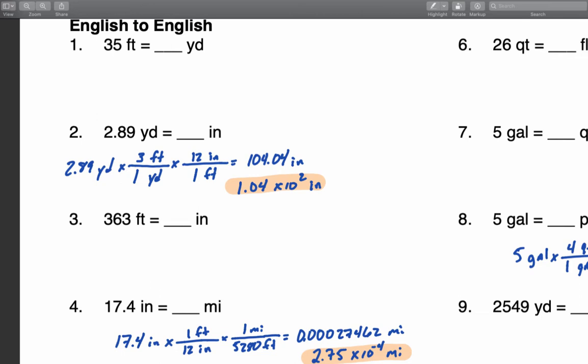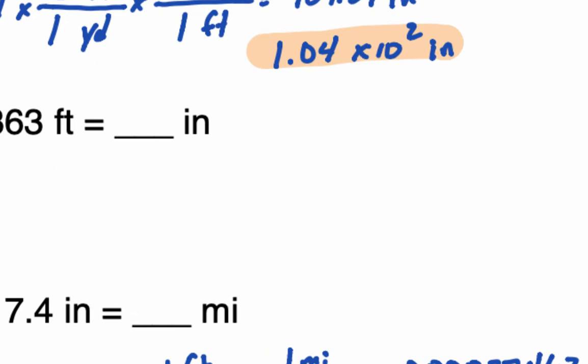So if the number you want to convert has three significant digits, your final answer should have three significant digits. For example, 2.89 converts to 104.04 inches. Because we only need three significant digits, on your calculator in scientific notation mode your answer would be 1.0404. In scientific notation, all numbers written to the left of times 10 count as significant. So you simply write the first three numerical values — in this case, 1.04.